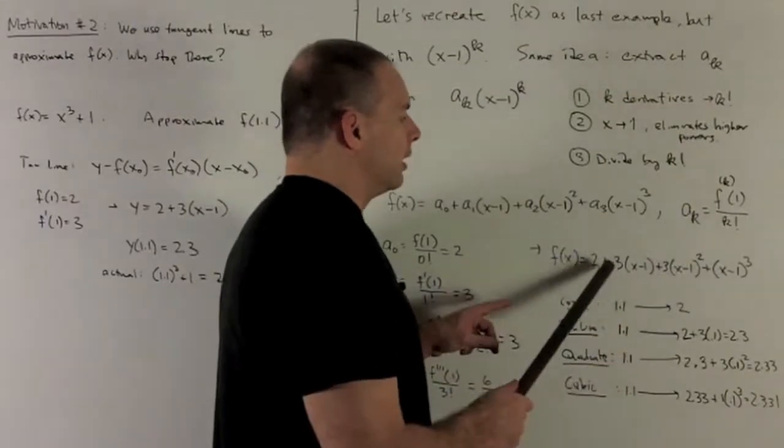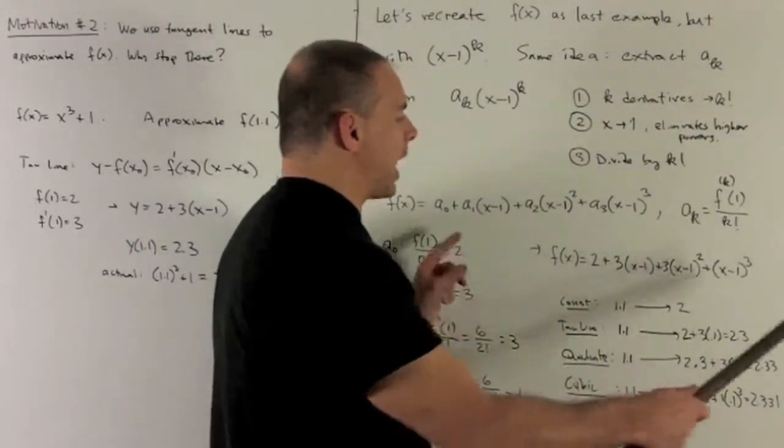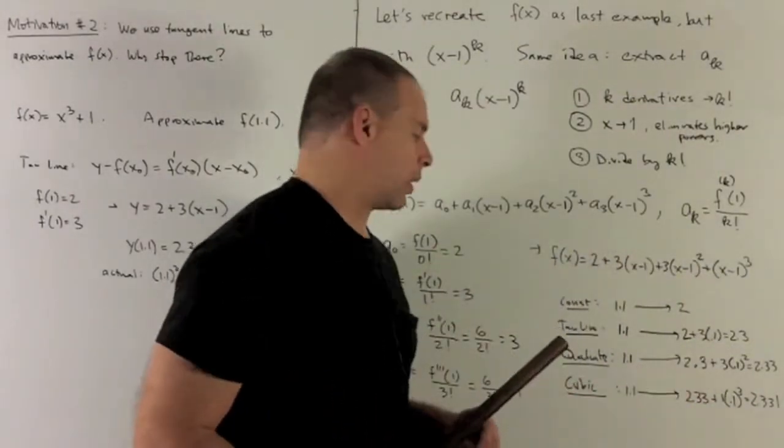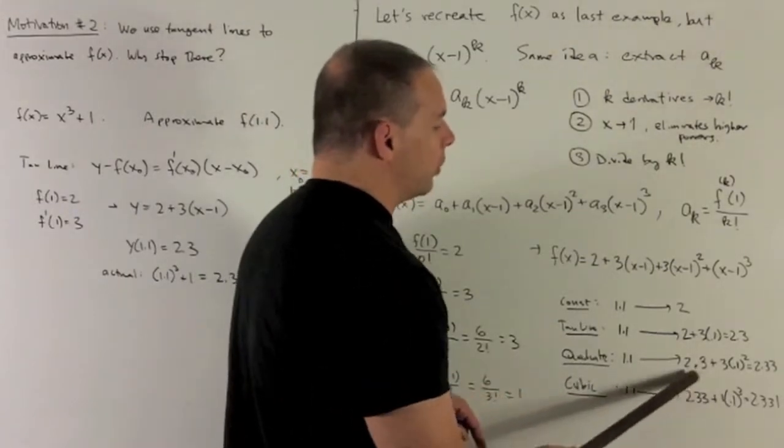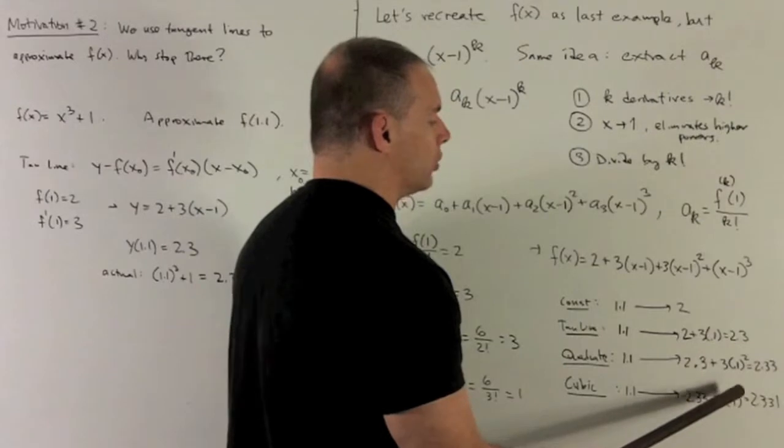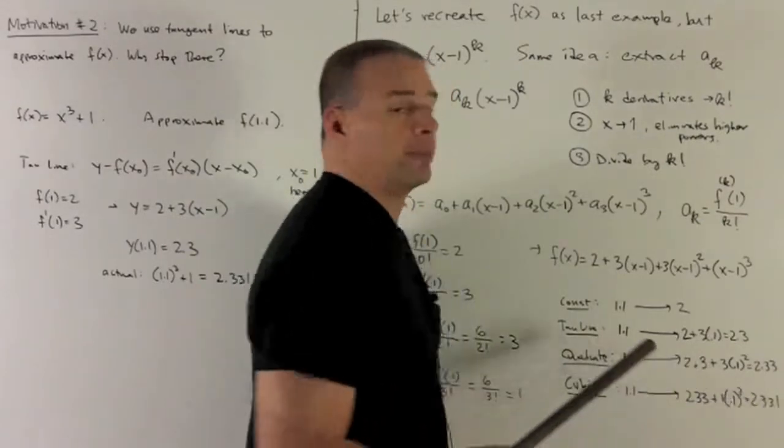It looks different, but if you expand all these terms out and collapse it, you're going to get x cubed plus 1. So I put my 1.1 in. We're going to take our last value, add 1 times 0.1 cubed, and then that gives me my 2.331.